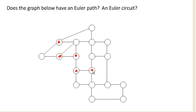So in this graph, we have a ton of vertices with odd degree. And so it is not going to be possible to come up with an Euler path or an Euler circuit on this graph as drawn.